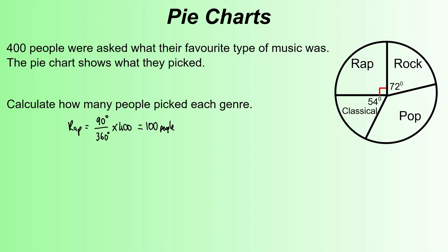90 over 360 simplifies down to a quarter, so a quarter of 400 is 100. Let's look at the other ones. We've got rock, and for rock we've got 72 out of 360 for our fraction. Again, we're multiplying by 400 because that's the fraction of the whole pie chart. 400 represents the whole pie chart, and if you type that into your calculator, you could simplify that down to a fifth, which gives you a fifth of 400, which is 80 people.